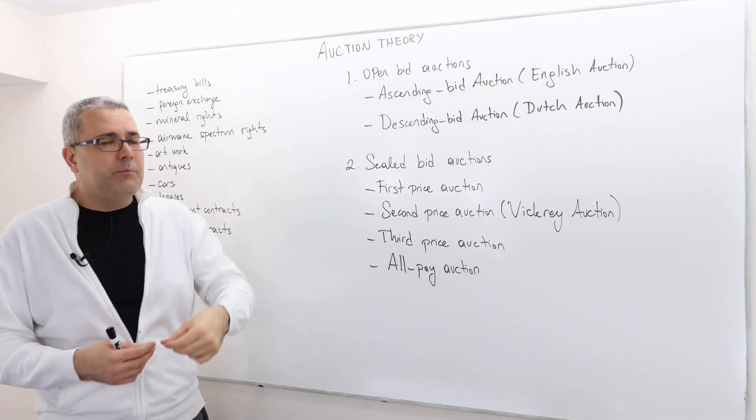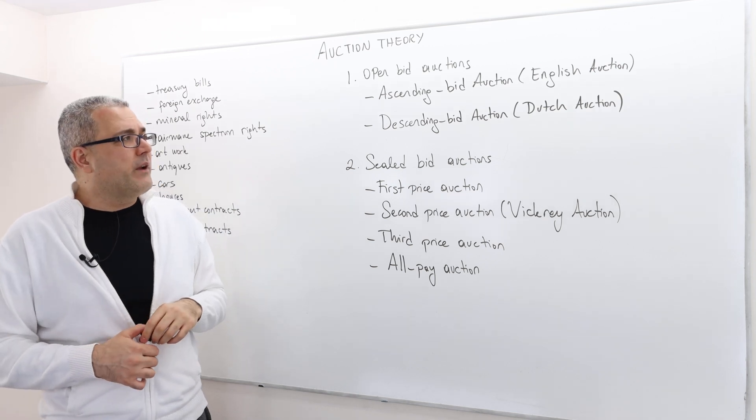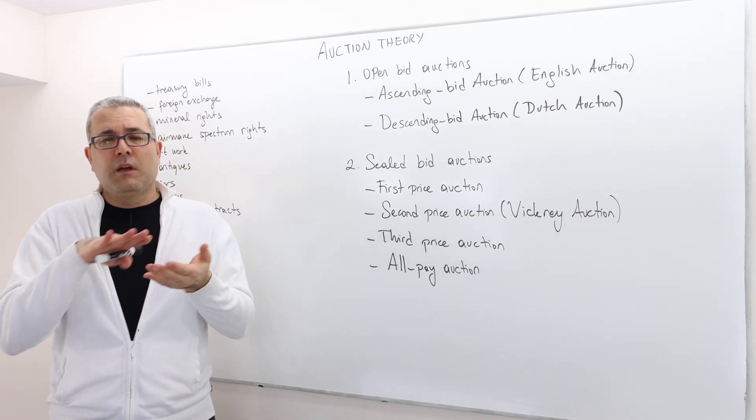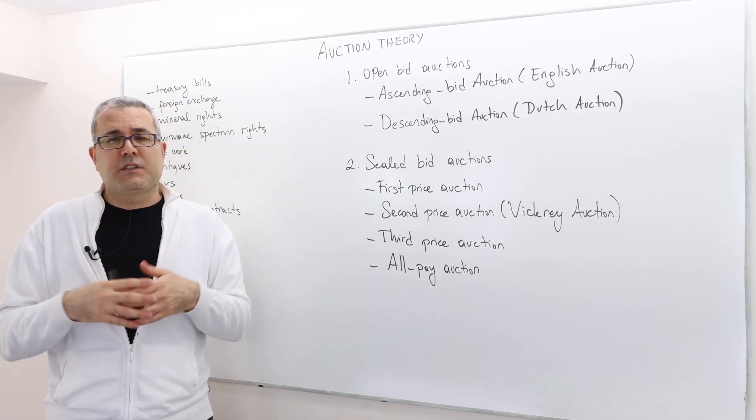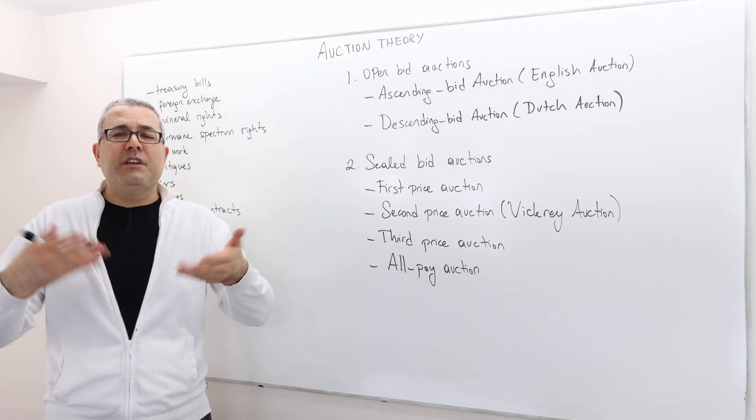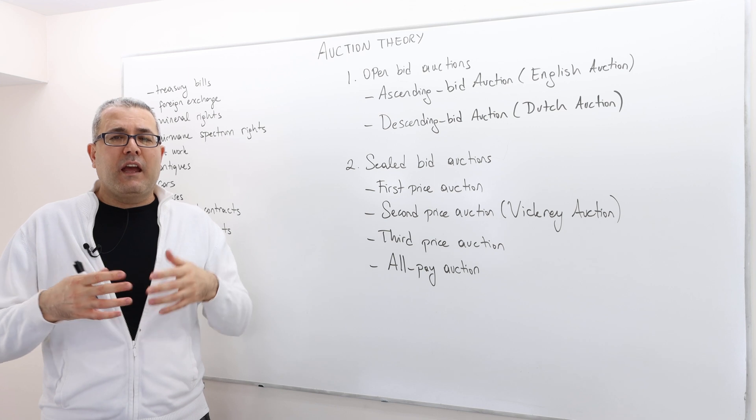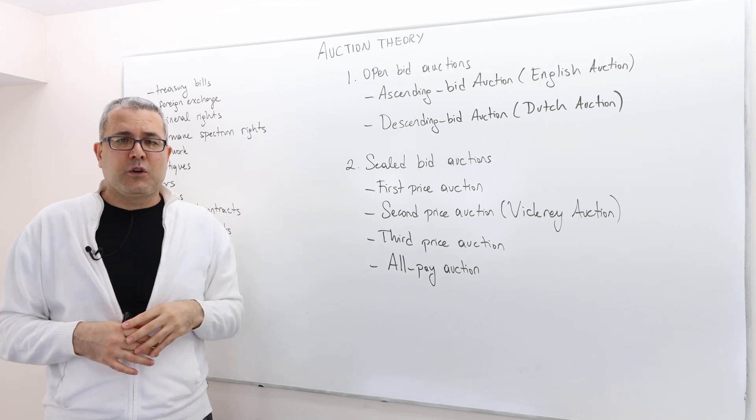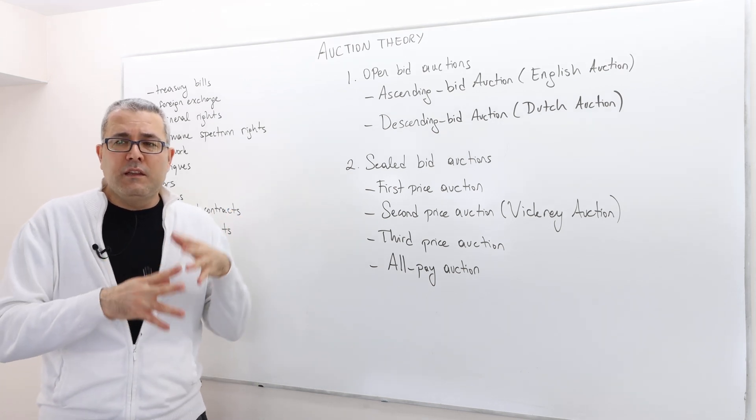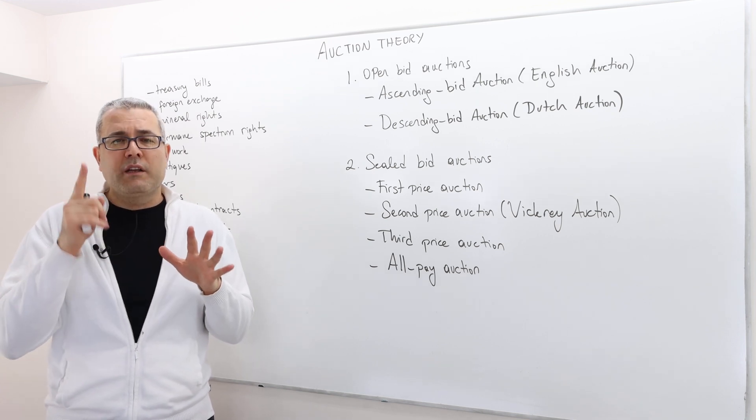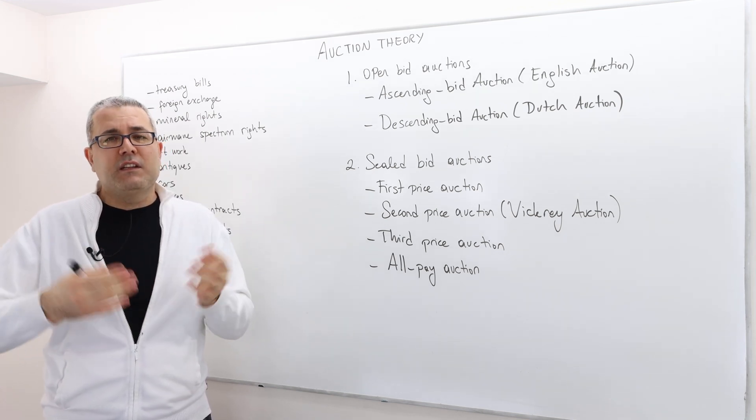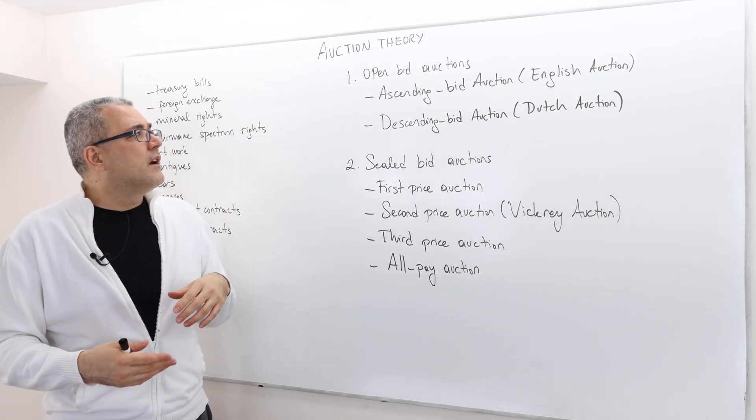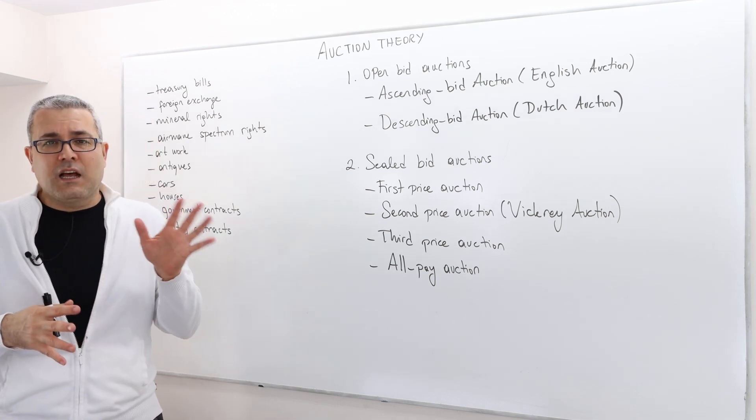Ascending bid auction or mostly known as English auction. What happens, the price starts from some reservation price or some opening bid and then the bidders increase, raise the price. And the bidder raises his hand and makes a bid and all the bids are observable. The bidding process continues until only one guy remains and he basically is announced as the winner and he pays his bid, last bid.